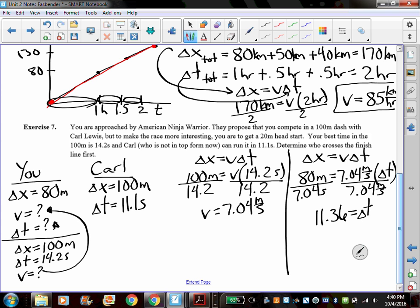Bummer. 11.36. So you can run this race in 11.36 seconds, but since 11.36 seconds is greater than Carl Lewis's 11.1 seconds, you unfortunately will lose this race. Maybe you just need to hit the track a little more often.